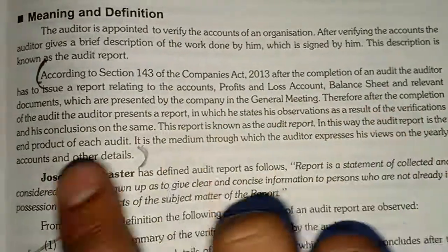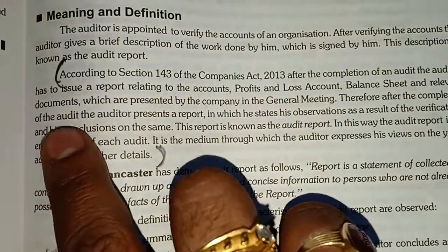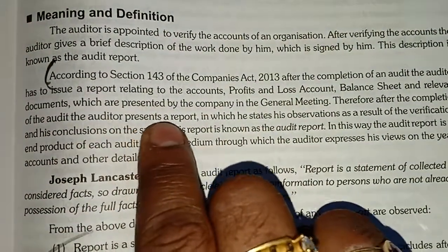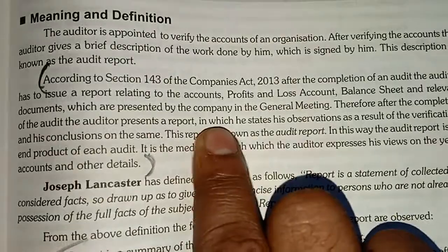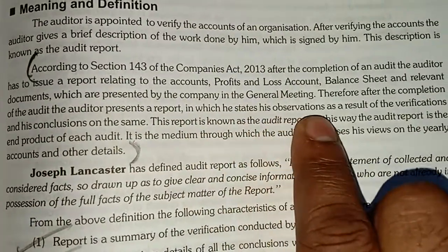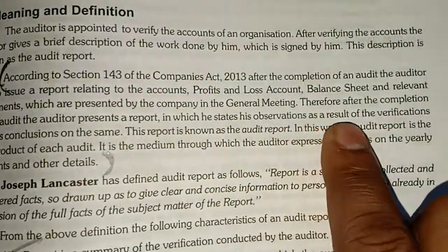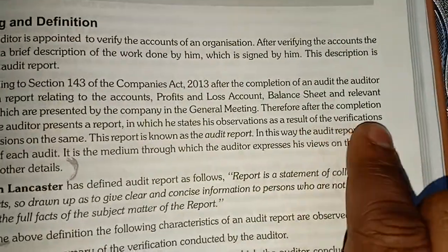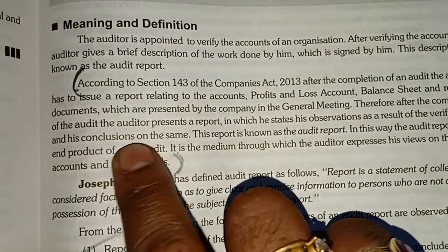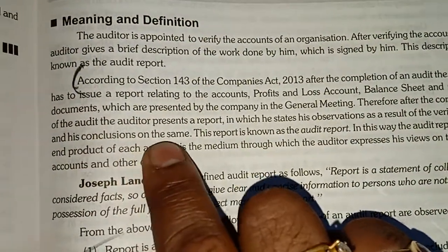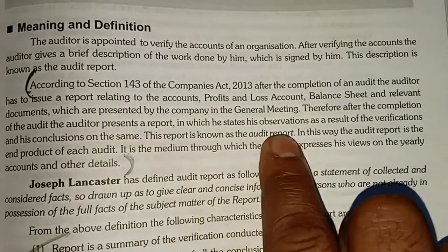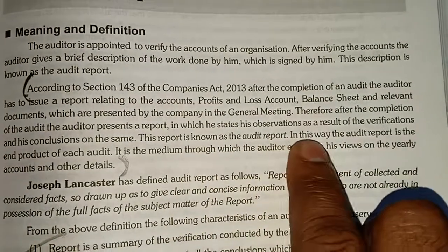After the completion of the audit, the auditor presents a report in which he states his observations as a result of verifications and his conclusions. This report is known as the audit report.